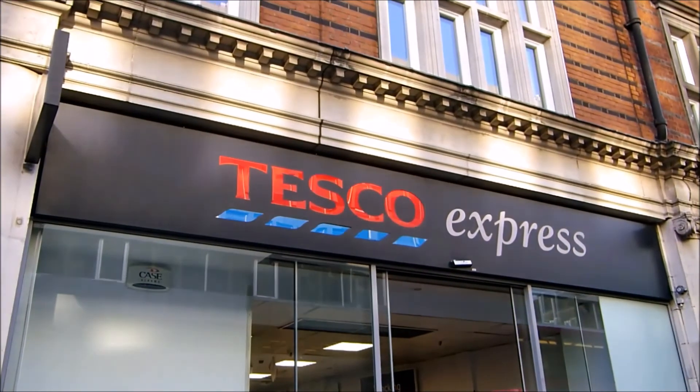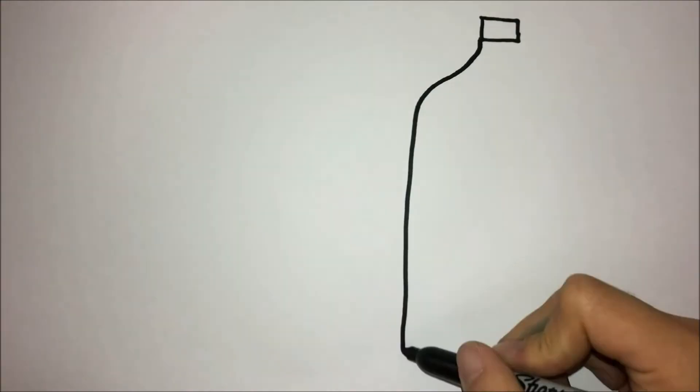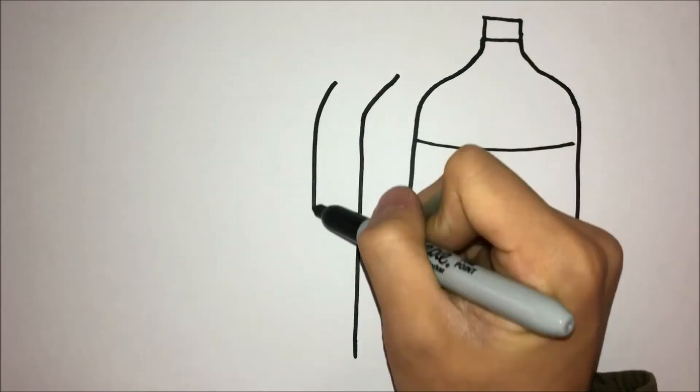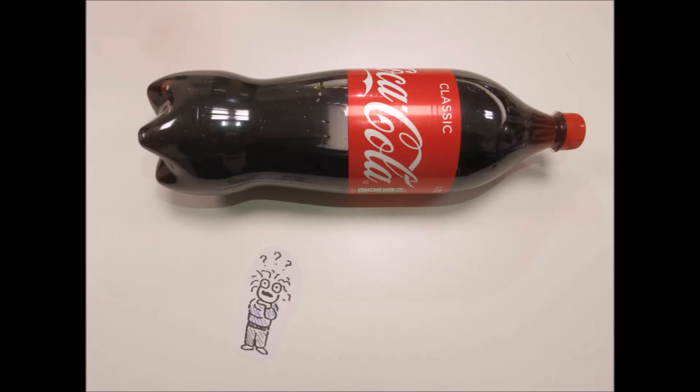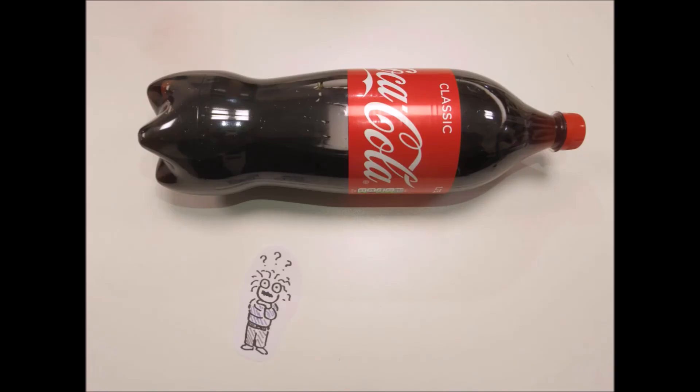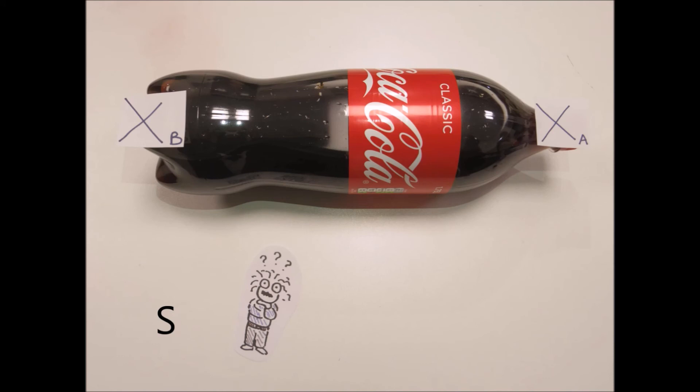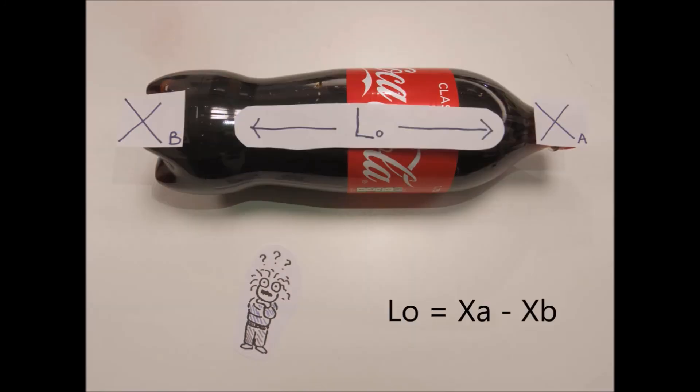Imagine you go to Tesco and buy a two-liter bottle of Coke. Would it be possible to shorten the length to a smaller 500 milliliter bottle using the principle of length contraction? Let's find out! Say the bottle is lying parallel to the x-axis at rest in an inertial system labeled as S. The left end of the bottle is labeled XB, and the right end is labeled XA. The length of the bottle in the rest frame, L0, is then XA minus XB.